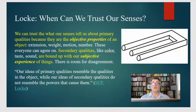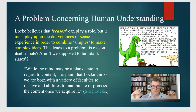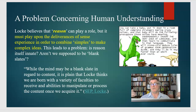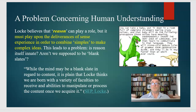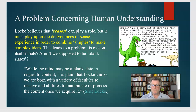Reason is there for us to minimize the contingencies — the variations, differences, and falsifiability of something. Reason can play a role in helping us combine simple pieces of information into complex ideas. To be reasonable means that something you've considered makes sense and follows logically. We're using reason in order to understand that the complex idea we have created in our minds is in fact correct. While the mind may be a blank slate in regard to content, Locke thinks we are born with a variety of faculties to receive and abilities to manipulate or process the content once we acquire it.